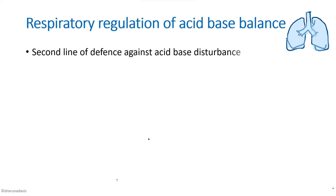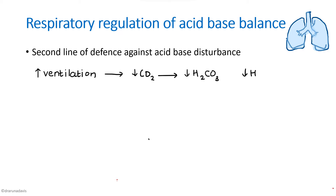The lungs are the second line of defense against an acid-base disturbance. When ventilation increases, carbon dioxide is blown out by the lungs. This causes a decrease in carbonic acid, which in turn causes a decrease in H+ ion concentration. So with increased ventilation there is a washout of carbon dioxide, leading to a decrease in H+ concentration, which means the body moves towards alkalosis.